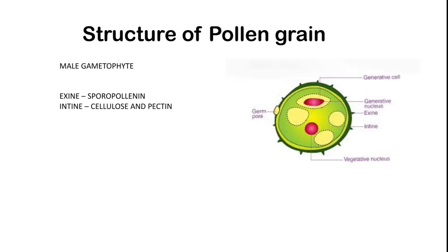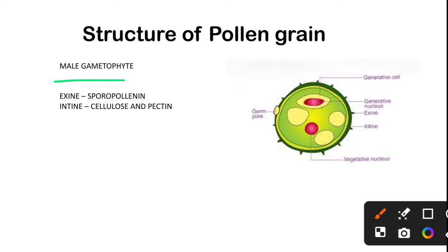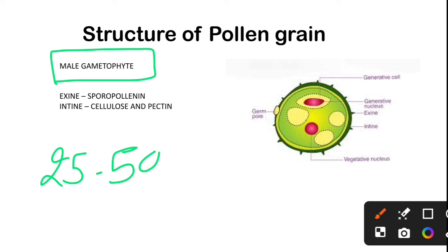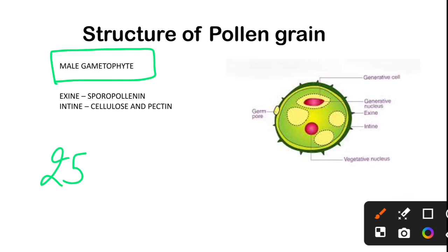Now pollen grains. The pollen grains are released from the anther. The pollen grains are also called the male gametophyte. The pollen grain has two layers. The outer layer is the exine and the inner layer is the intine. The exine is made of sporopollenin, while the intine is made of cellulose. This is a commonly asked question.